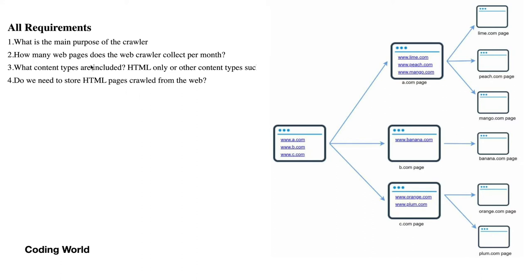Second, how many web pages does the web crawler collect per month? According to that you have to design your system — it should be distributed and performant enough. Third, what content types are included — are we scraping only HTML, images, or PDFs? Fourth, do we need to store the HTML pages crawled from the web, or are we only processing and extracting data and then discarding the HTML?